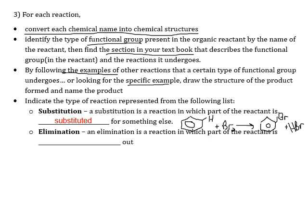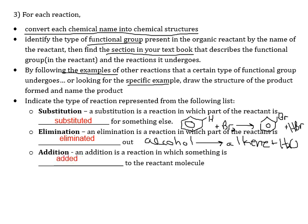Elimination is where something is removed from the reactant — for example, eliminating water from an alcohol gives an alkene. This is also called a condensation reaction. An addition reaction adds something across a double bond — the reverse of elimination. In organic chemistry, elimination reactions are called E reactions and substitution reactions are called S reactions.